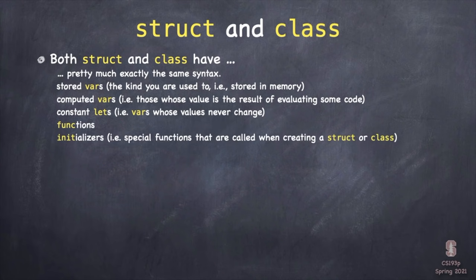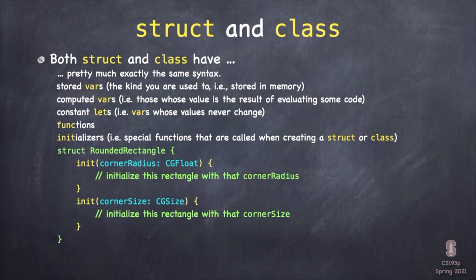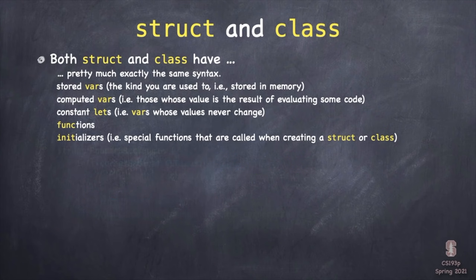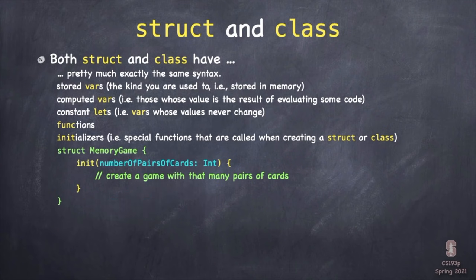Both structs and classes also have initializers — special functions called init, which don't use the func keyword. Init is the function that gets called when you create a struct or a class. For example, RoundedRectangle(cornerRadius: 20) almost certainly calls an init in the RoundedRectangle struct. You can have multiple inits with different arguments, giving flexibility for initialization. We'll be seeing inits today — our MemoryGame initializer will be initialized with the number of pairs of cards in the game, which is exactly how you'd think of creating a new game.